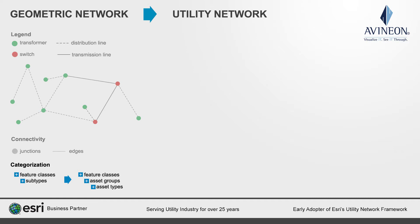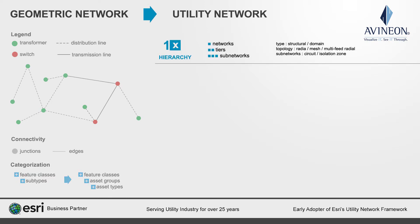Now that we understand the categorization, let us understand the differences in the networks. In a geometric network, connectivity cannot be organized into hierarchies. In contrast, utility network enables managing connectivity as network types, tiers, and subnetworks. The tiers support topology types such as radial, mesh, and multi-feed. For instance, subnetworks provide the ability to model a circuit within an electrical system or a pressure zone within a gas system.